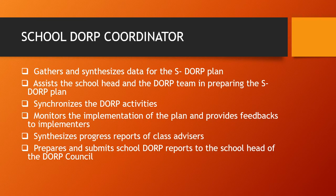What is the role of the school DORP coordinator? The coordinator gathers and synthesizes data for the school DORP plan. Assists the school head and the DORP team in preparing the school DORP plan. Synchronizes the DORP activities. Monitors the implementation of the plan and provides feedback to implementers. Synthesizes progress reports of class advisors. Prepares and submits school DORP reports to the school head and the DORP council.